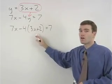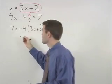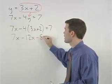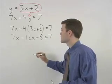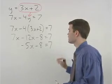Now we can solve for x. If we simplify on the left side, we get 7x minus 12x minus 8 equals 7 which simplifies to negative 5x minus 8 equals 7.